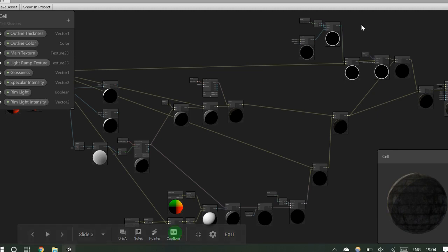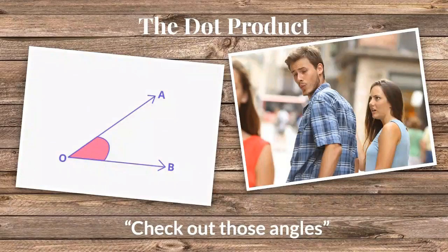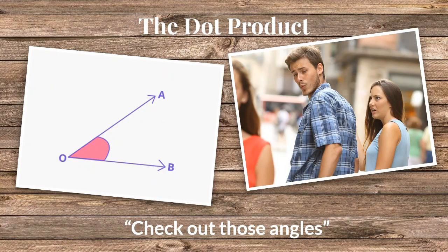The math isn't that scary either — it's basically all based around one thing: the dot product. This always confused me in school with all that matrix math stuff. The dot product was something where the name didn't make sense and the notation didn't make sense to me. But when I started using it visually and getting actual graphical results, it started to make a lot of sense. It's pretty easy — it's really just comparing two angles.